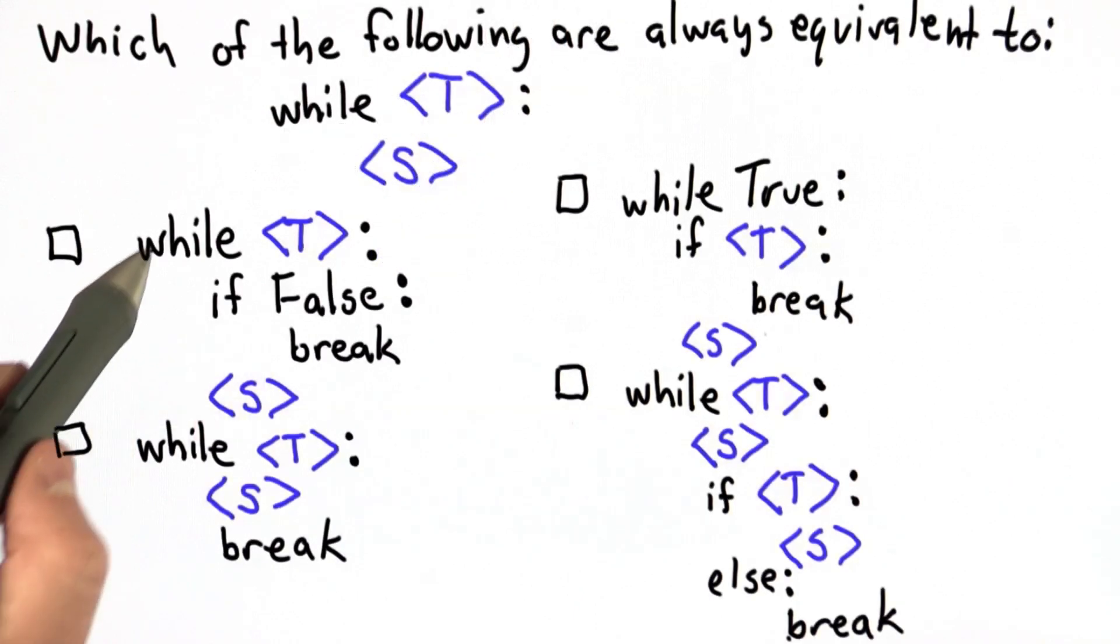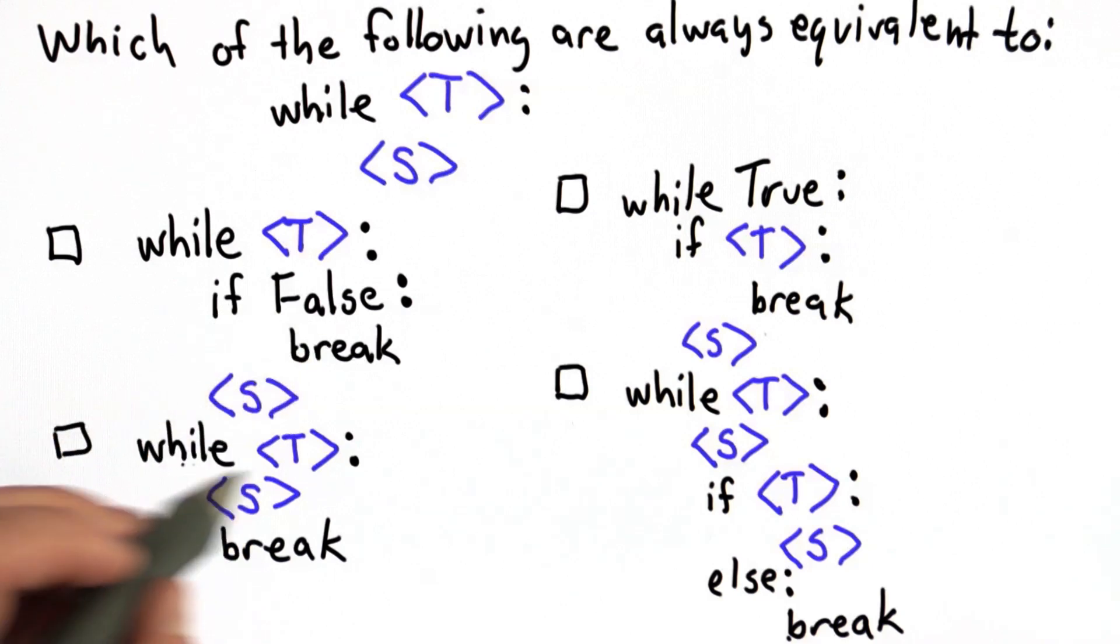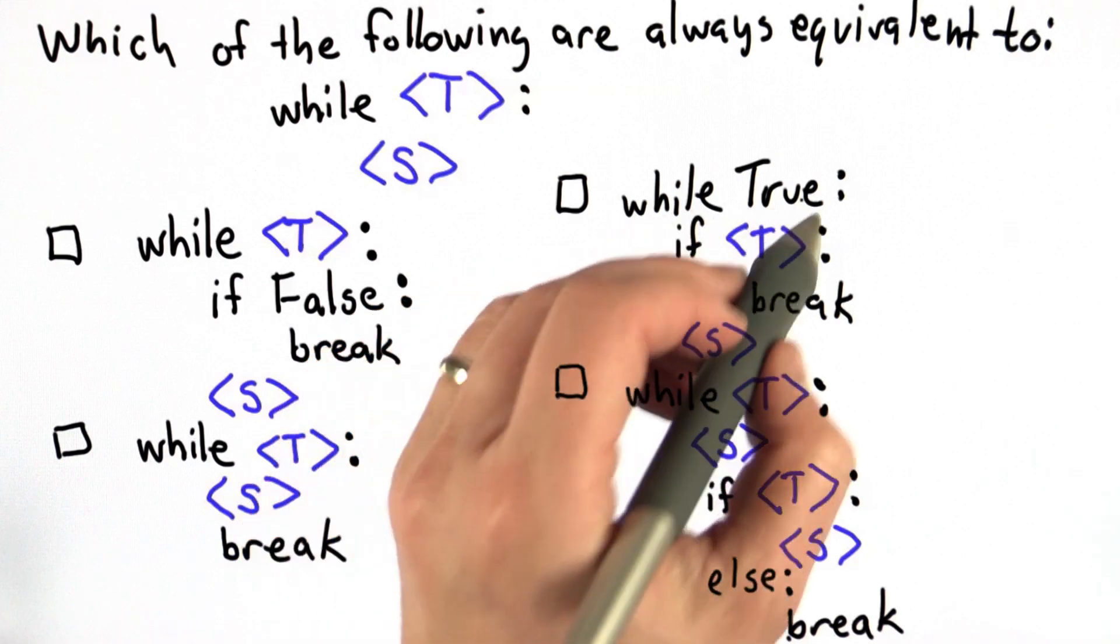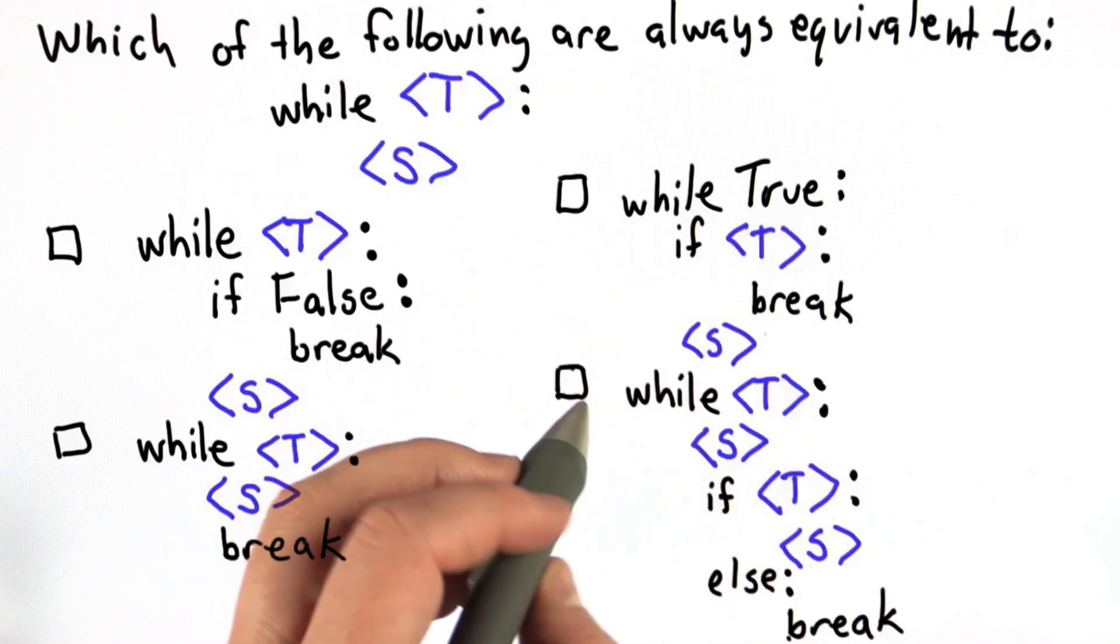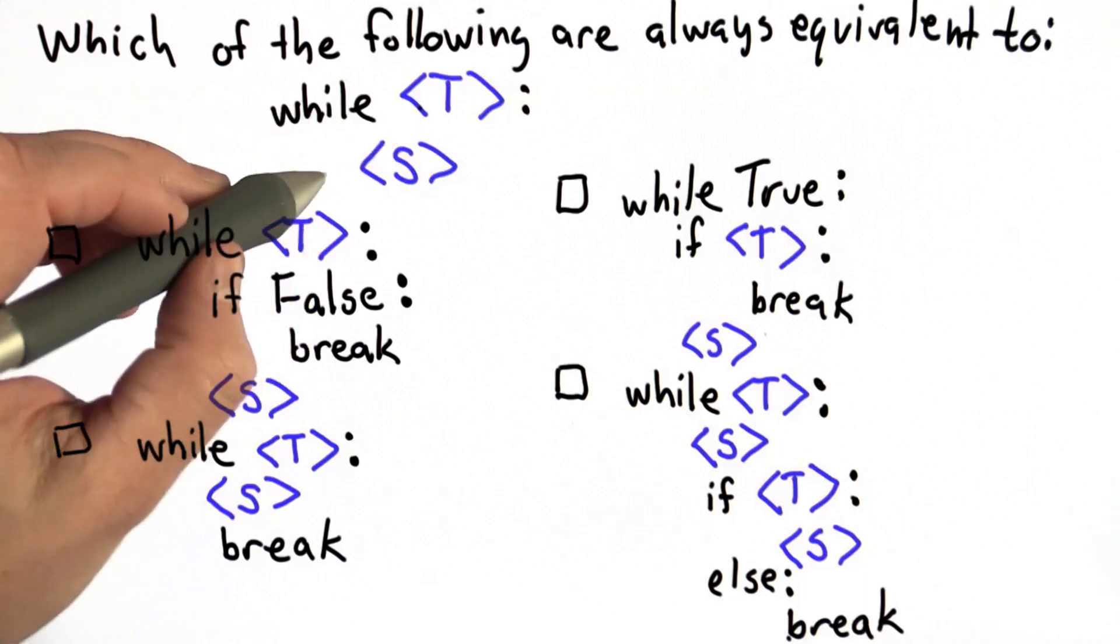So here are the four choices. The first one, we have a while loop with a nested if. The second one, we have a while loop with the statement and a break. The third choice, we have a while loop with a nested if and an else and a break. So your goal is to check all the ones that are equivalent to the while t s, where t and s can be any test expression in any statement.